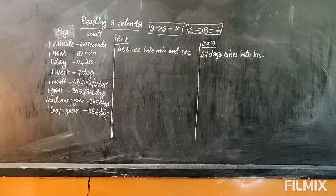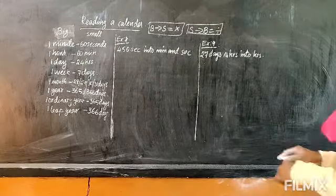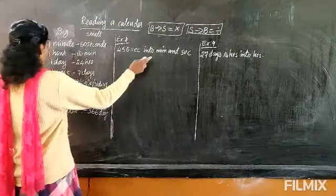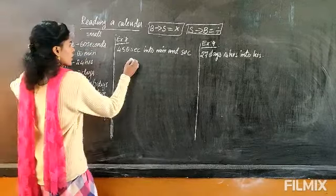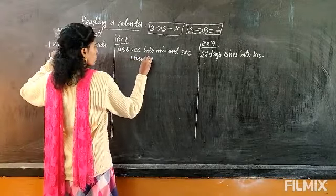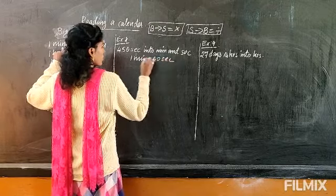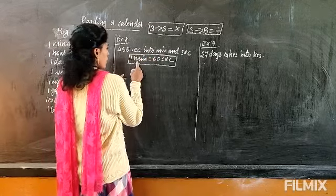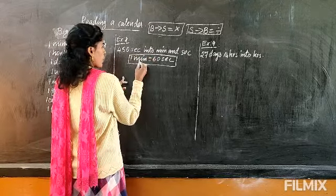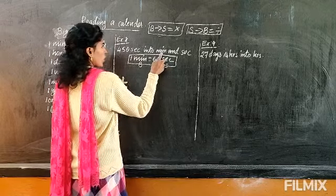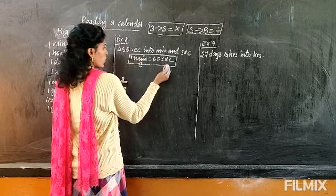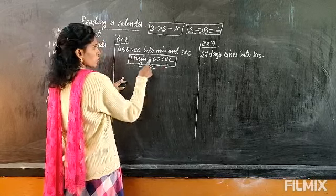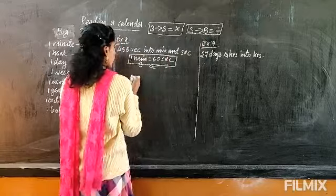Now: 450 seconds into minutes and seconds. Seconds to minutes — the formula is 1 minute equals 60 seconds. Comparing minute and second: minute is big, second is small. We are converting seconds into minutes, so from small to big — which means we divide.